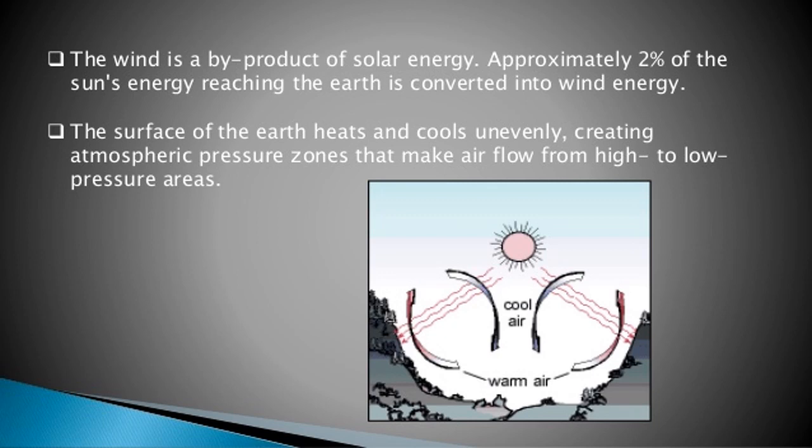The wind is a byproduct of solar energy. Approximately 2% of the sun's energy reaching the earth is converted into wind energy. The surface of the earth heats and cools unevenly, creating atmospheric pressure zones that make air flow from high to low pressure areas. This is the cool air entering and these are the warm air goes up and cool air goes down. This is called creating wind flow.